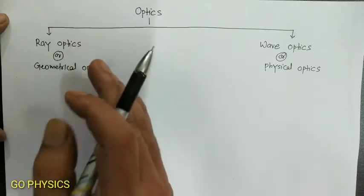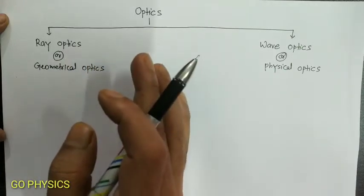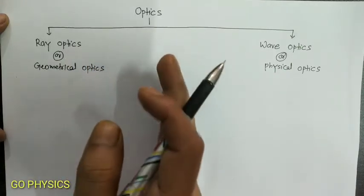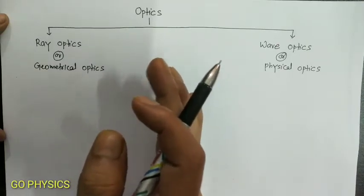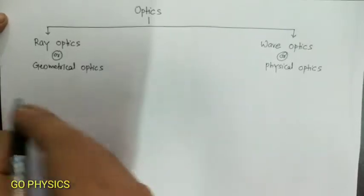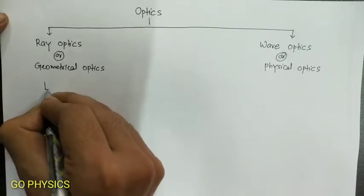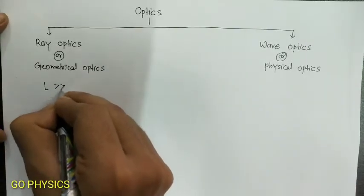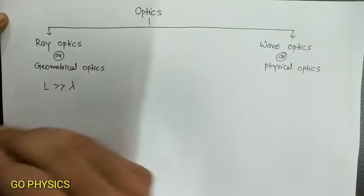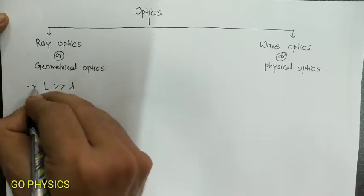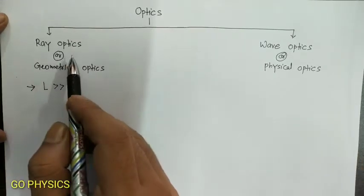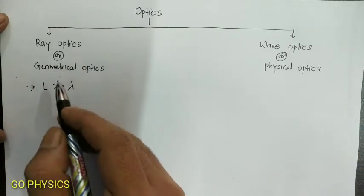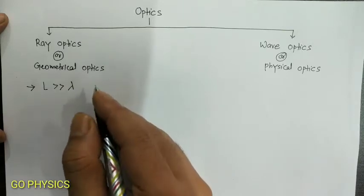In ray optics, dimensions of the objects like mirrors, lenses, prisms, optical instruments, etc., are much larger than the wavelength of light. In ray optics we study phenomena like reflection and refraction of light.